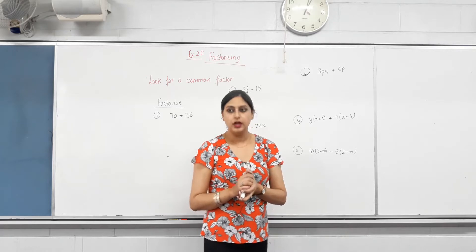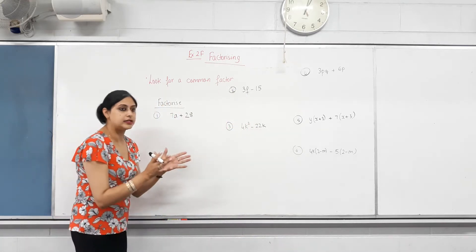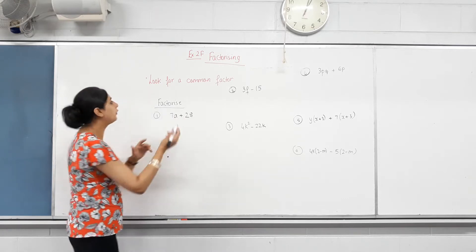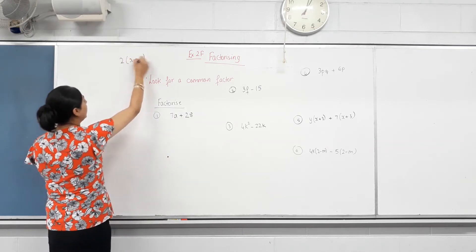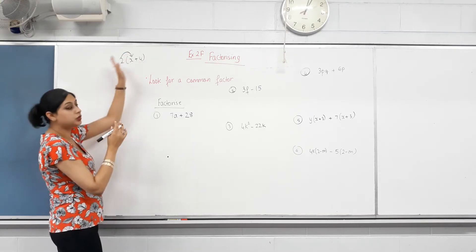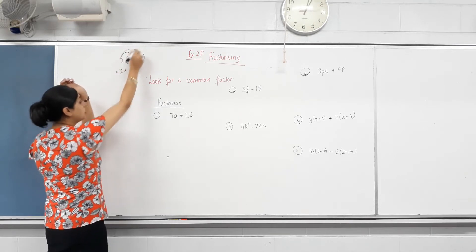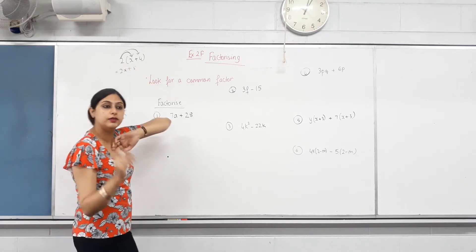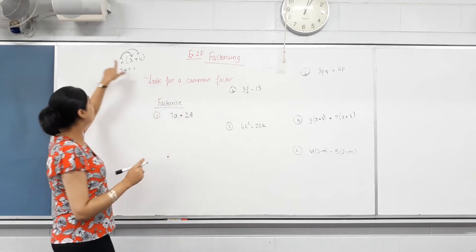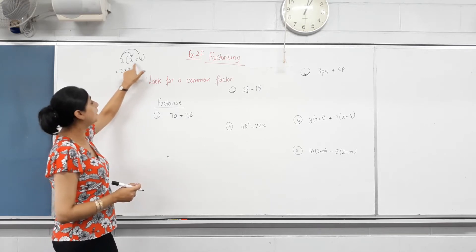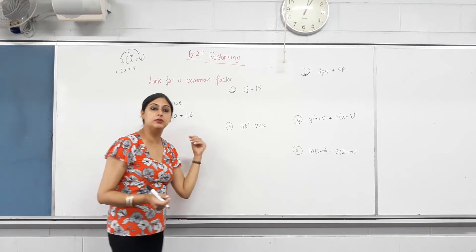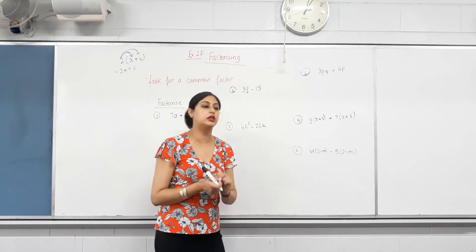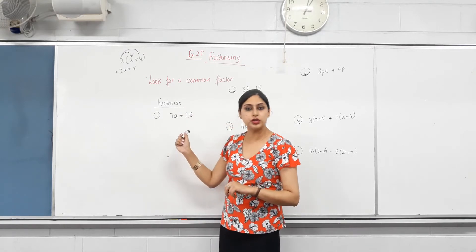Now we know what factors are. When we expand something we're moving things inside the bracket — we multiply. So for example, taking two inside the bracket means two times x and two times four, giving positive eight. Now we do the opposite: the opposite of multiplying is dividing. So we divide all the terms by the same number — that number must be the highest common factor of all the terms.